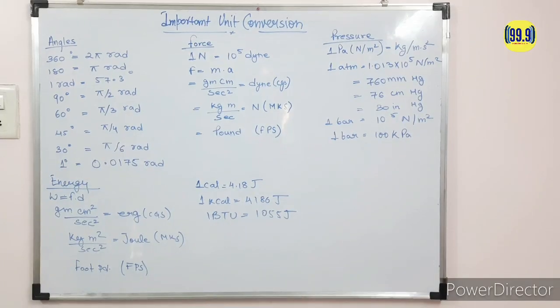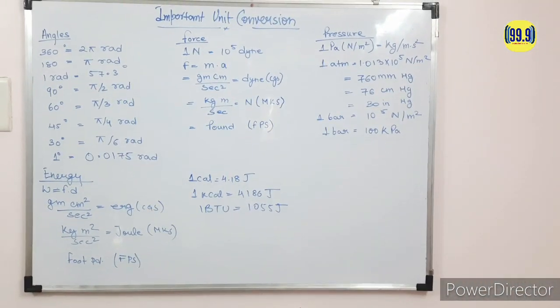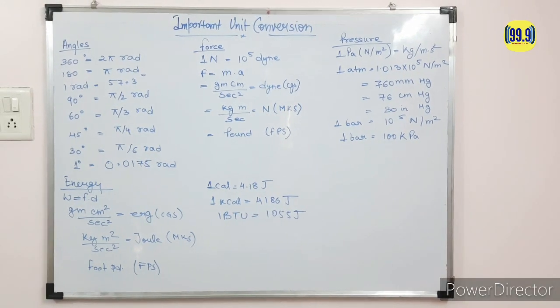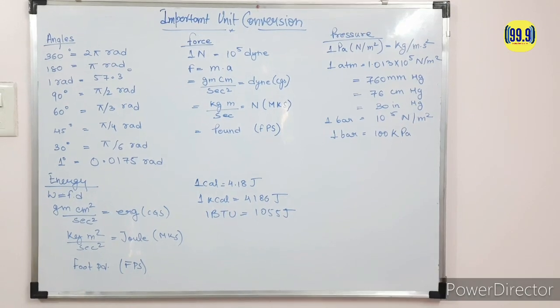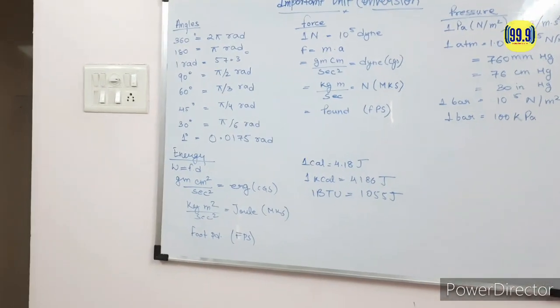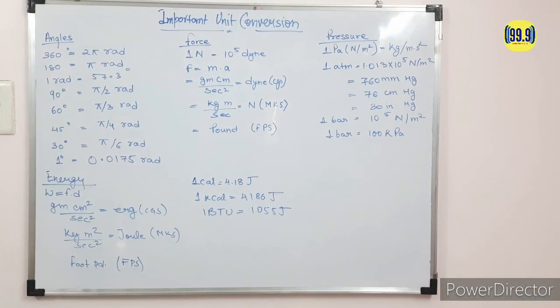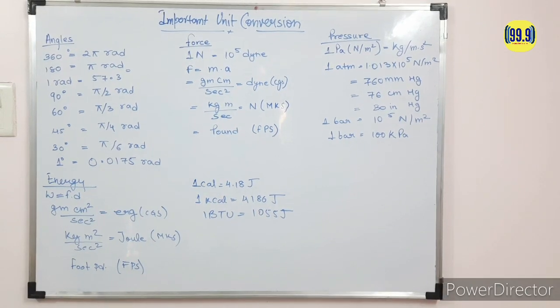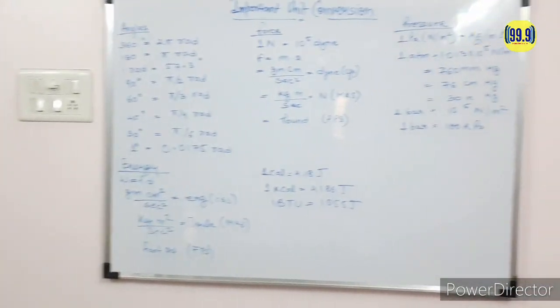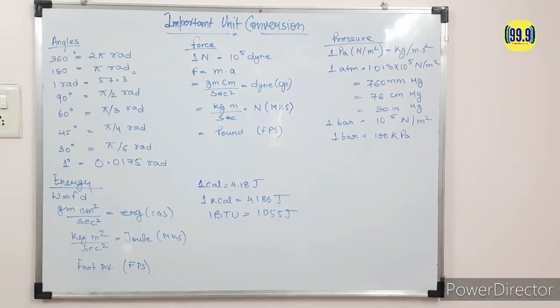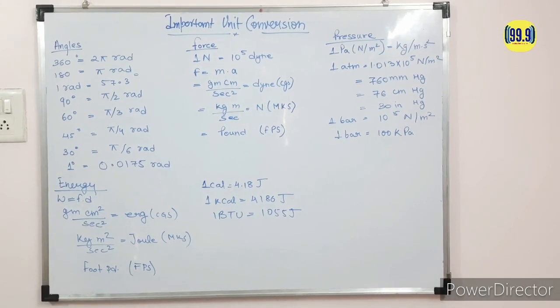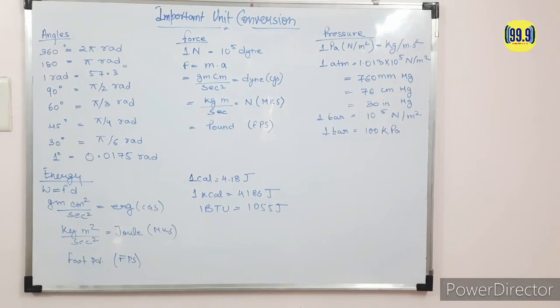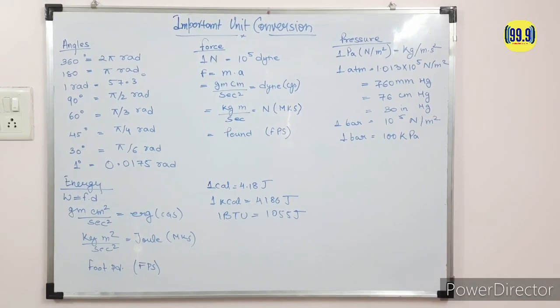Now come to angles, force, pressure, and energy — these units are also important for solving various types of numericals. For angles: 360 degrees is equal to 2π radians, and 180 degrees is equal to π radians. 1 radian is equal to 57.3 degrees. 90 degrees is π/2 radian, 60 degrees is π/3 radian, 45 degrees is π/4 radian, 30 degrees is π/6 radian, and 1 degree is equal to 0.0175 radian.